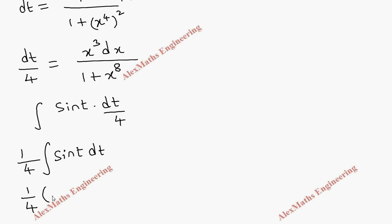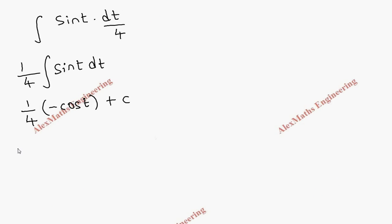And integration of sine t is minus cos t plus c. And we have to replace the t. So finally it is minus 1 by 4 cos of tan inverse x power 4 plus c.